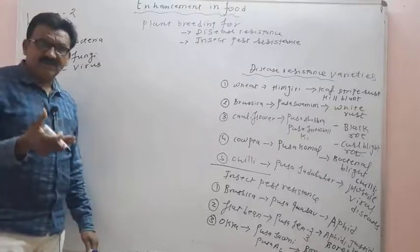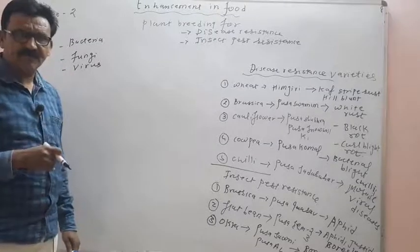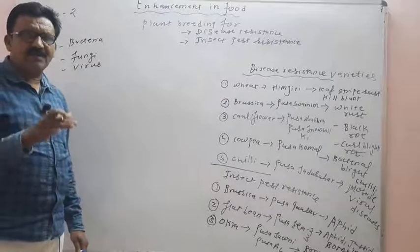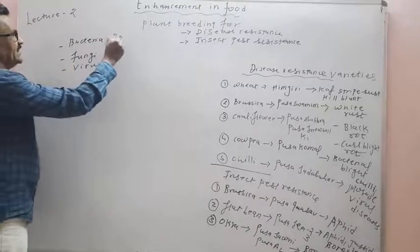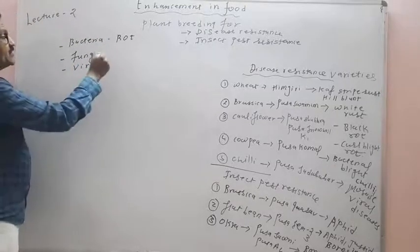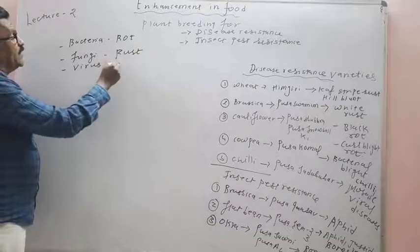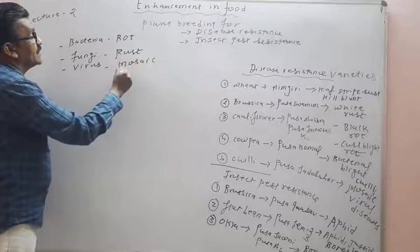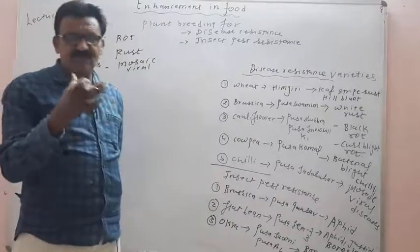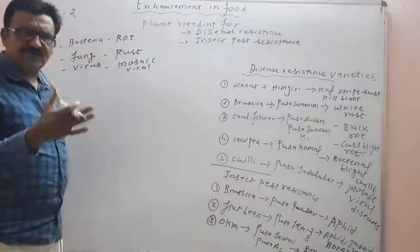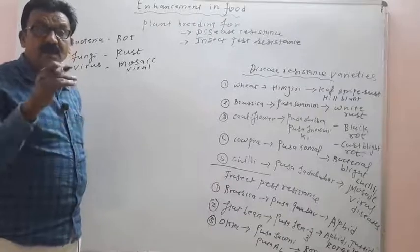Bacterial disease, fungal disease, and viral disease reduce the crop yield. Bacteria causes rot diseases, fungi causes mostly rust diseases, and viruses cause mosaic viral diseases. So bacteria cause rot and blight diseases, fungi cause rust diseases, and viruses cause mosaic viral diseases.